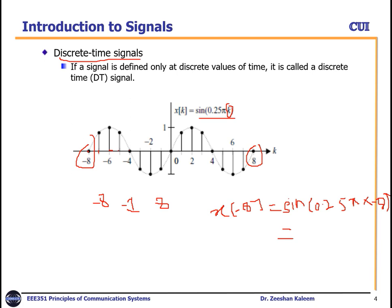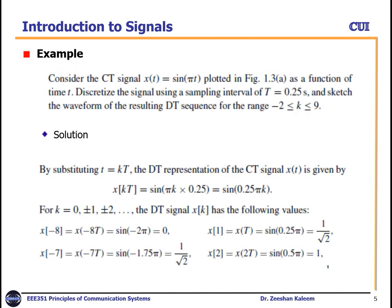For k = −8 we get x = 0. Similarly x(−7) has some magnitude, and x(−6) equals 1. This is called a discrete time signal because we have amplitudes at discrete values of time. Consider the example: continuous time signal x(t) = sin(πt); discretize it using a sampling interval of 0.25 seconds.